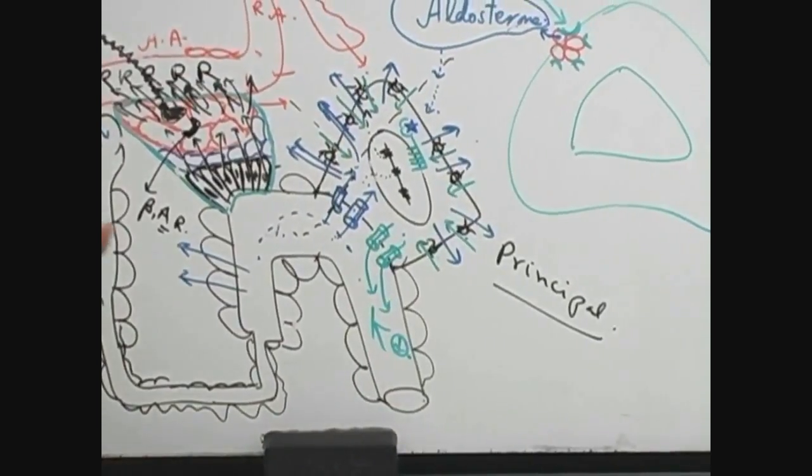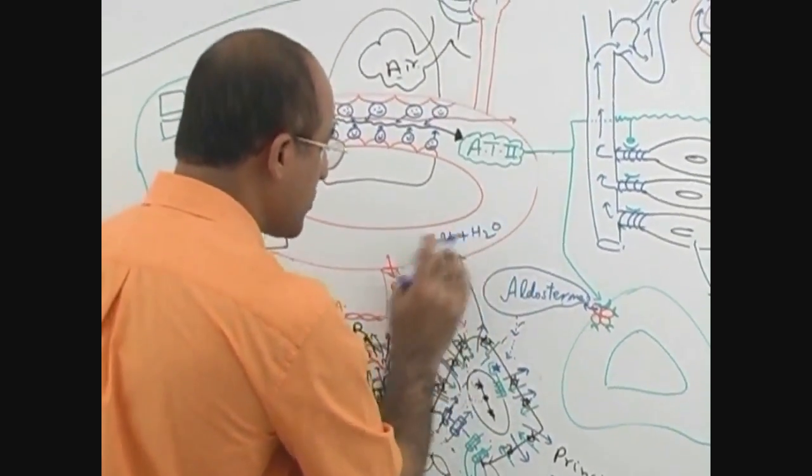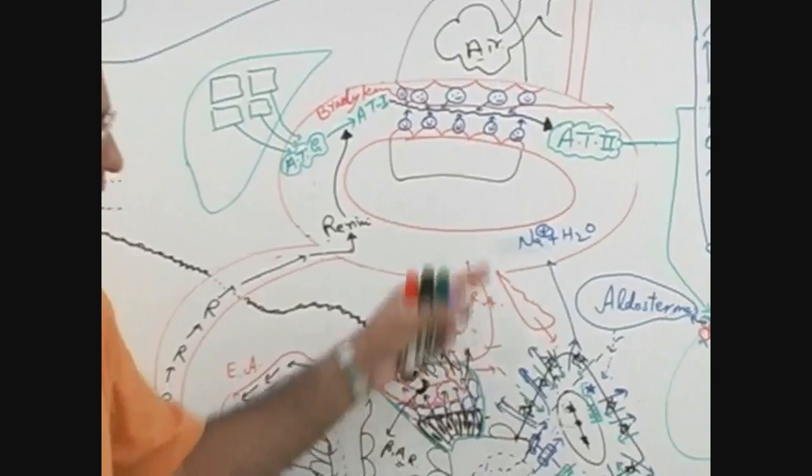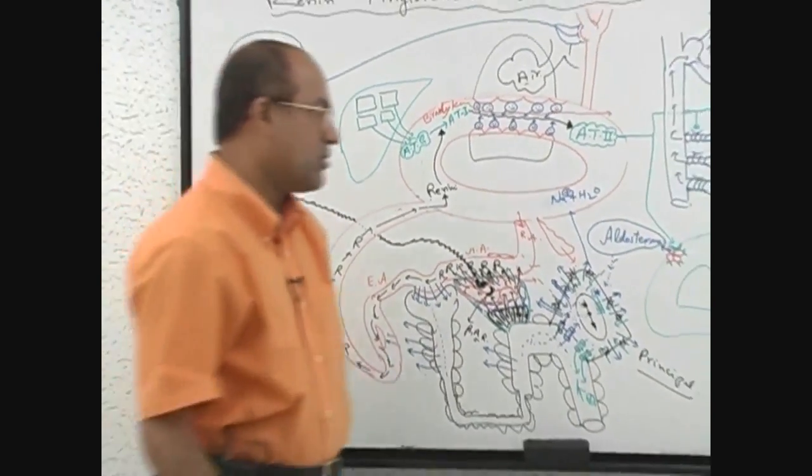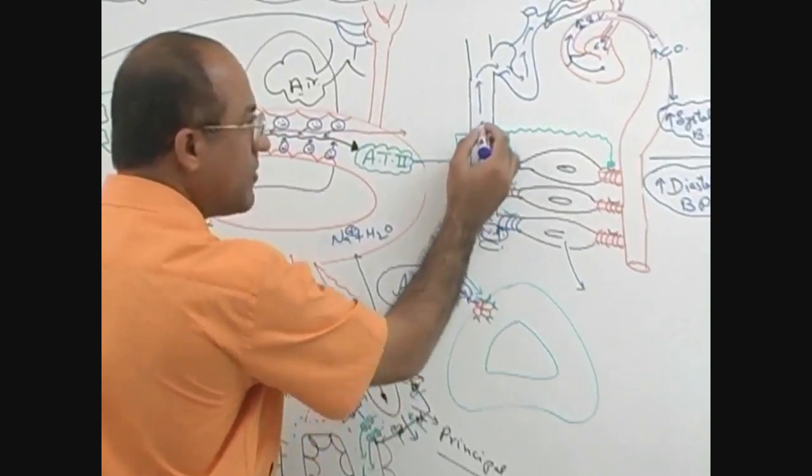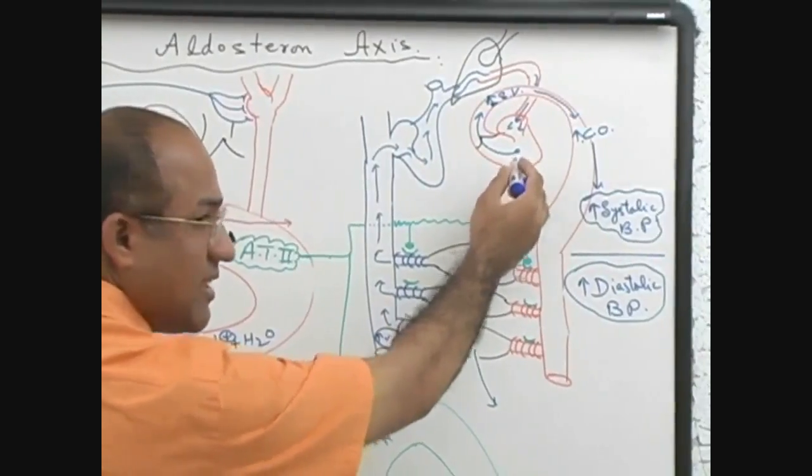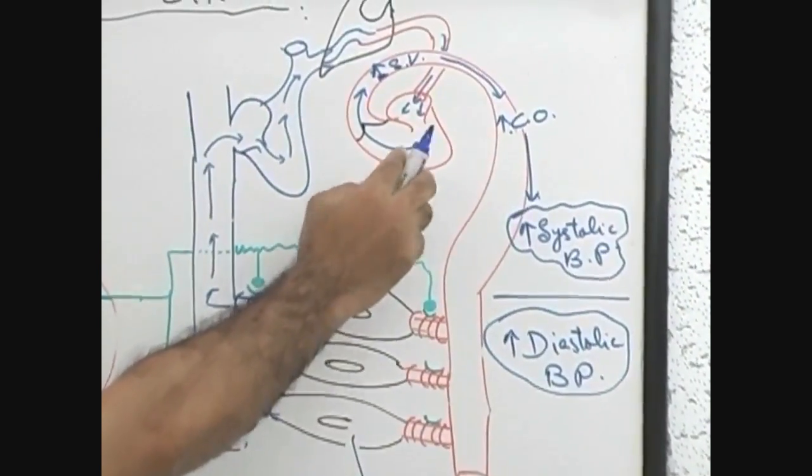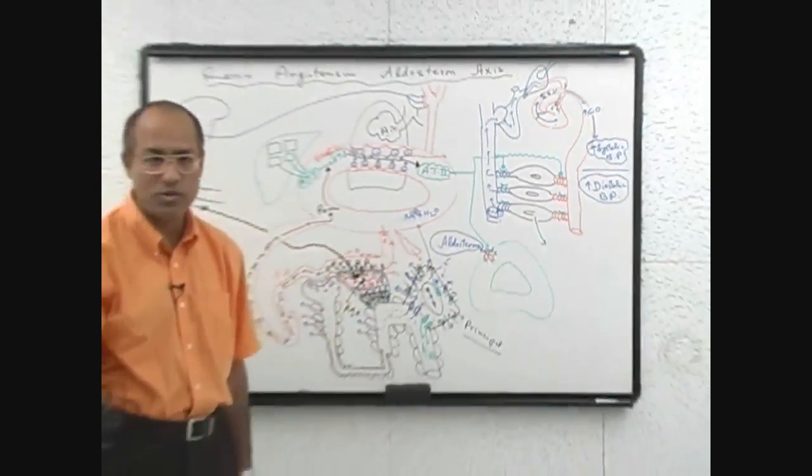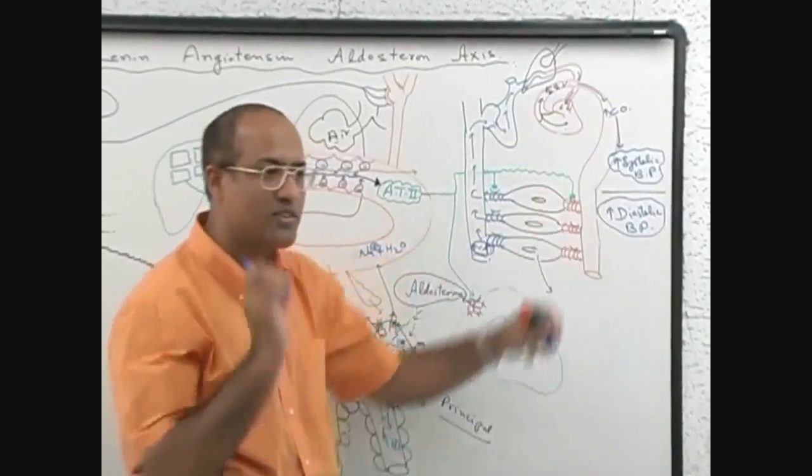Now this salt and water, this sodium and water which is retained in the blood, will increase the blood volume. If blood volume is increased, then venous return will increase. So cardiac ventricular filling will increase, ventricular contractility will increase, and systolic blood pressure will go up. This is how aldosterone, by retaining salt and water, takes the systolic blood pressure up.